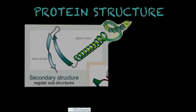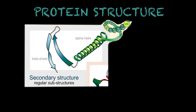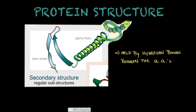Moving on to secondary structure, we will see two subtypes: the beta sheet and the alpha helix. When amino acids bind to one another in the primary structure, they start forming alpha helixes and beta sheets — the beta sheet looks a bit like a pleated shirt or an accordion. These structures are sustained and held together by hydrogen bonds between the amino acids.